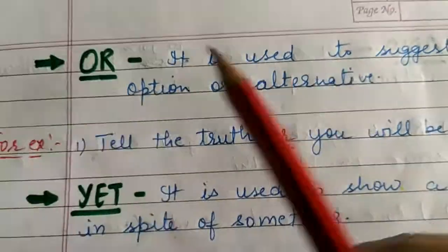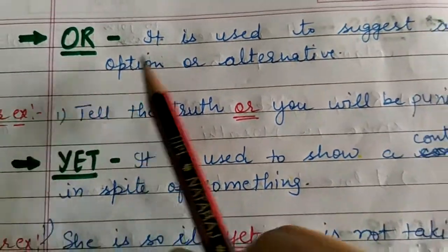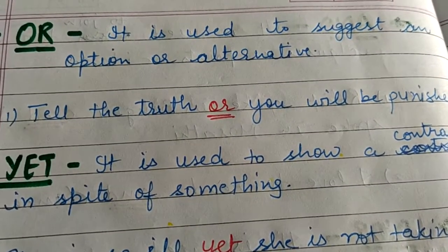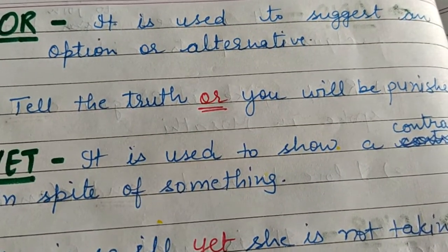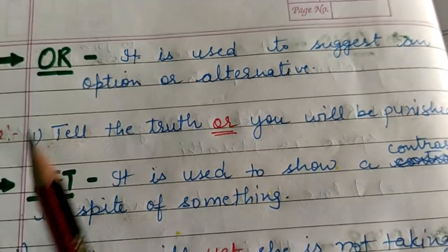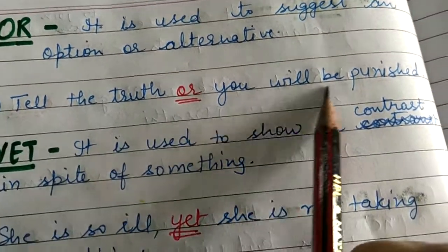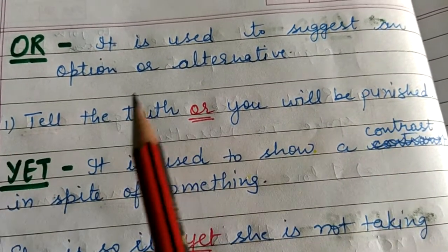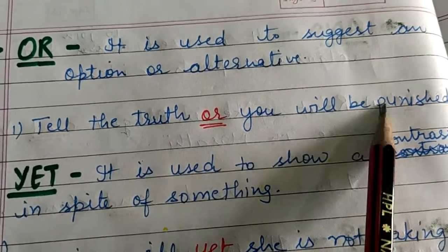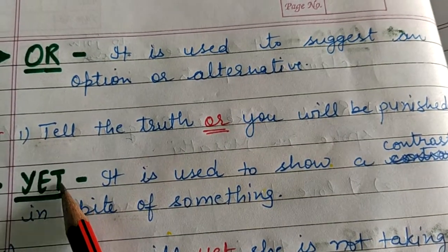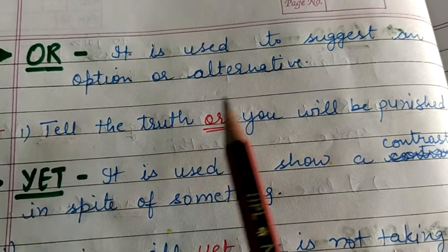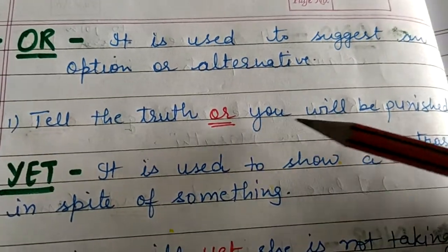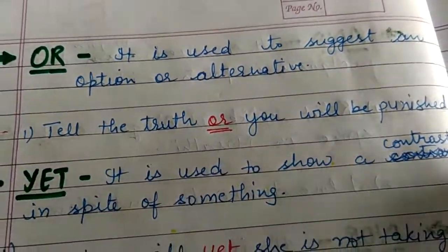Next is conjunction 'or'. It is used to suggest an option or alternative. Jab hum kisi bhi cheez ke liye option suggest karte hain, then we use 'or'. Example: 'Tell the truth or you will be punished.' Ya sach batao ya phir punishment milegi. What is the option? To tell the truth or to get punishment. Another example: 'Would you like to have tea or coffee?' Coffee and tea are both alternatives or options. So to suggest options or alternatives, we use conjunction 'or'.